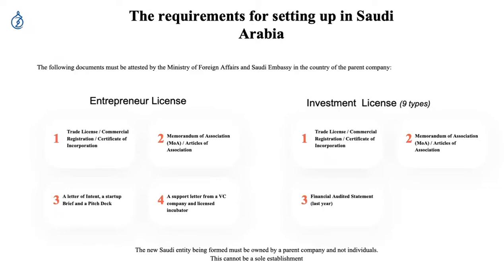When it comes to MISA licenses, you have a choice of basically two different types: an entrepreneur license and an investment license. The investment license is split into nine sub-types, and the entrepreneur license is just one.